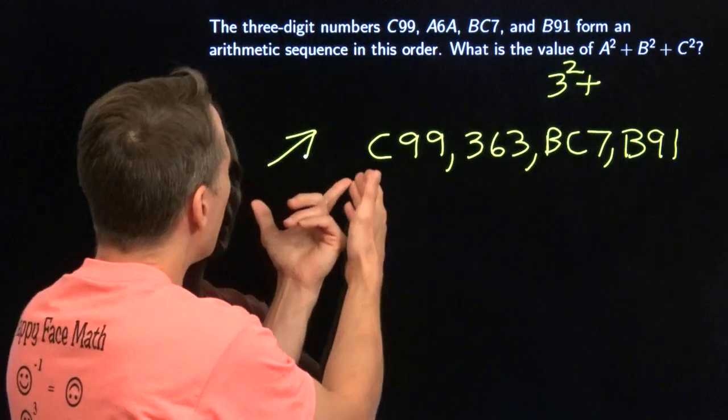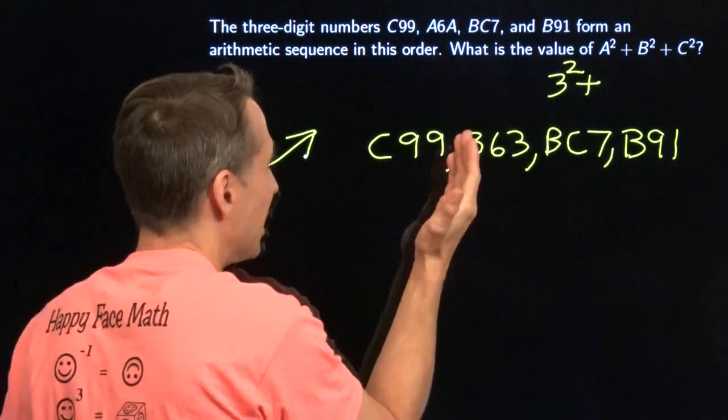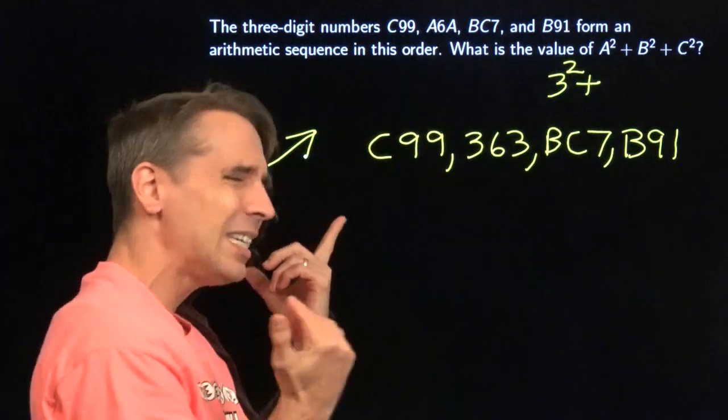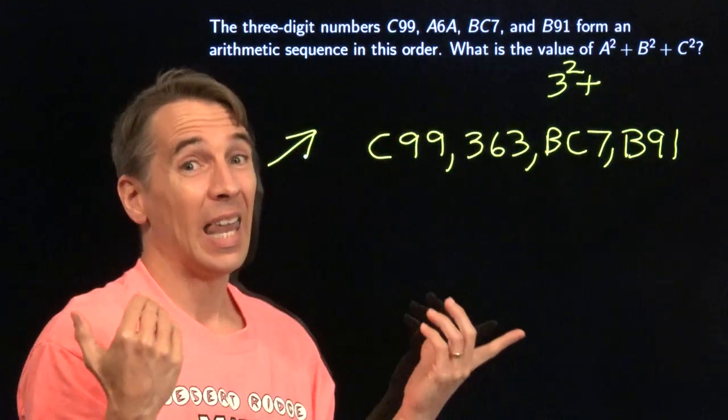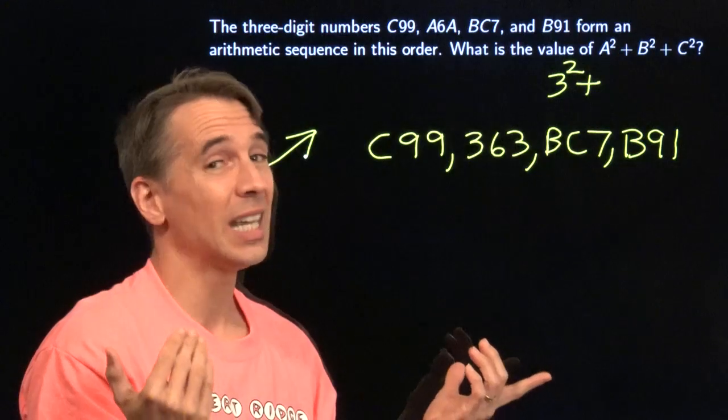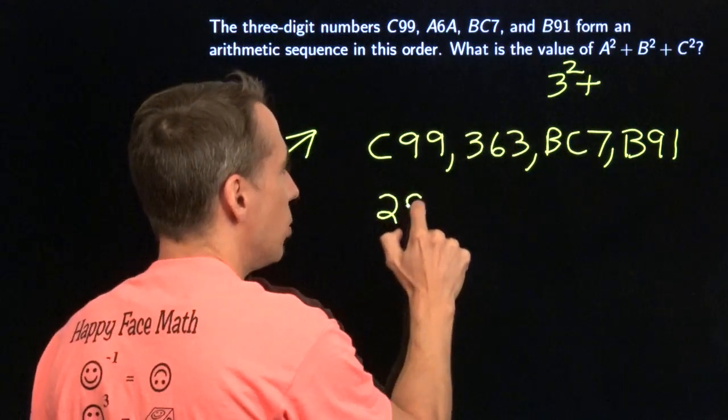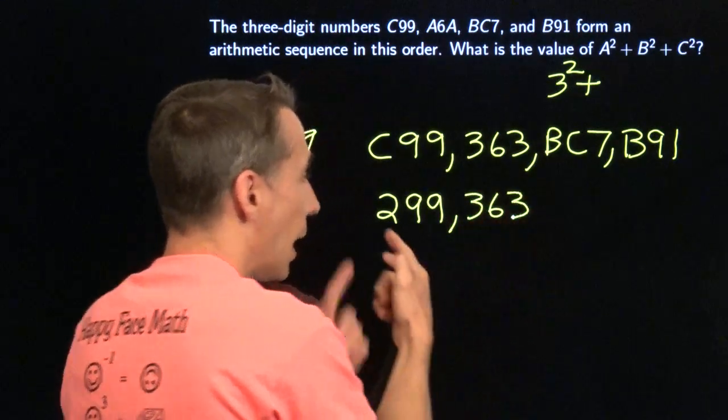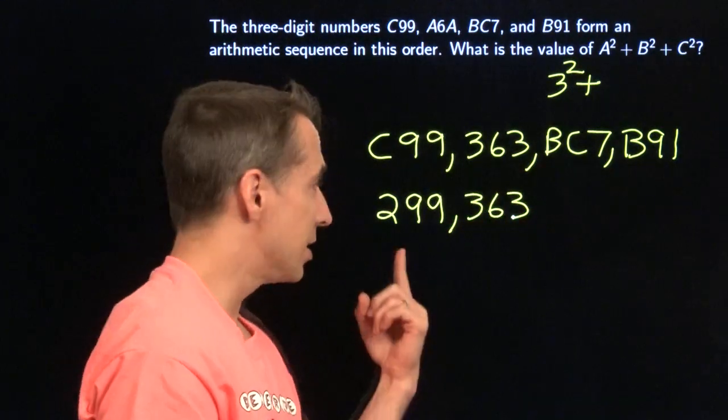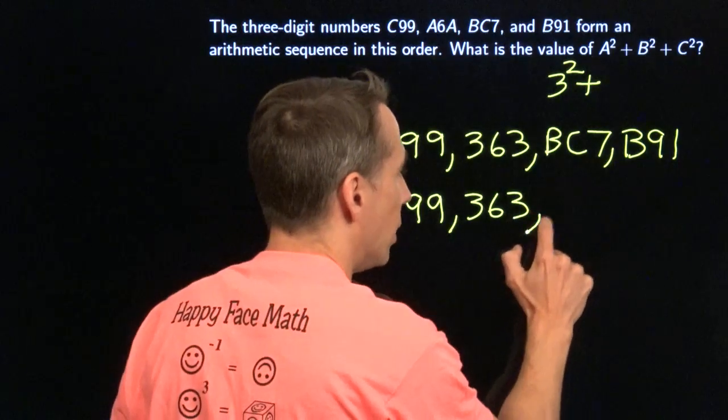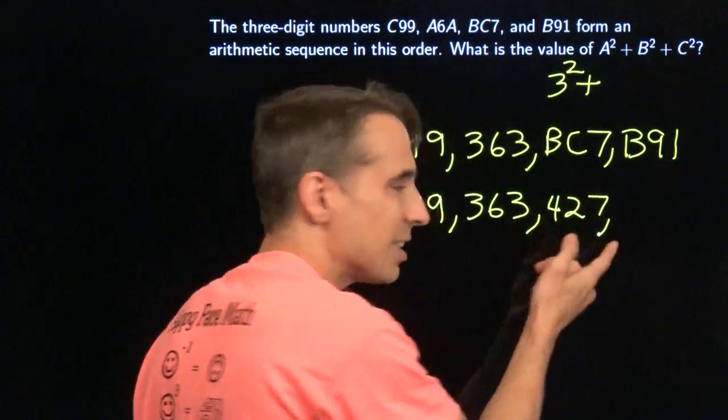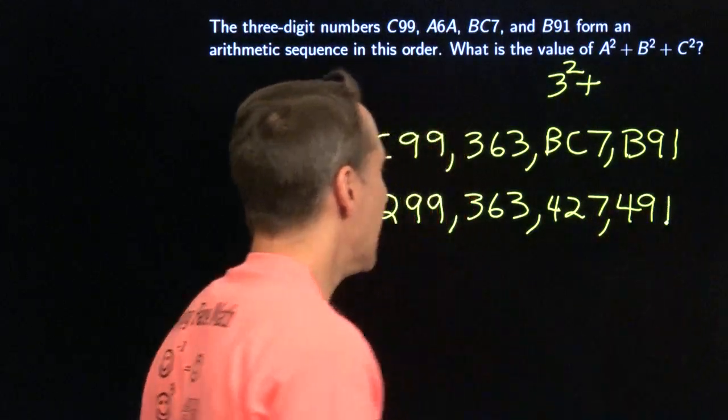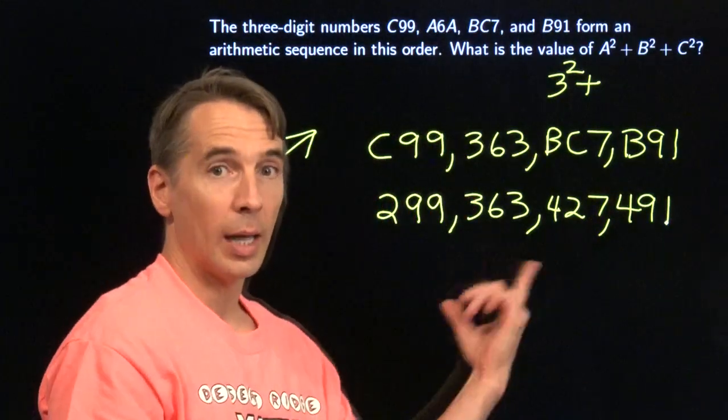So now we know what c is. We know that c is not going to be the same thing as a. I can't put a 3 in there. We're going up. And we need to be going up by less than 100. So c can't be 1. So c has to be 2. And we're going up by 64 at each step. We add 64 on here, we get 427. We add 64 on to that, we get 491. And now we know that c is 2 and b is 4.